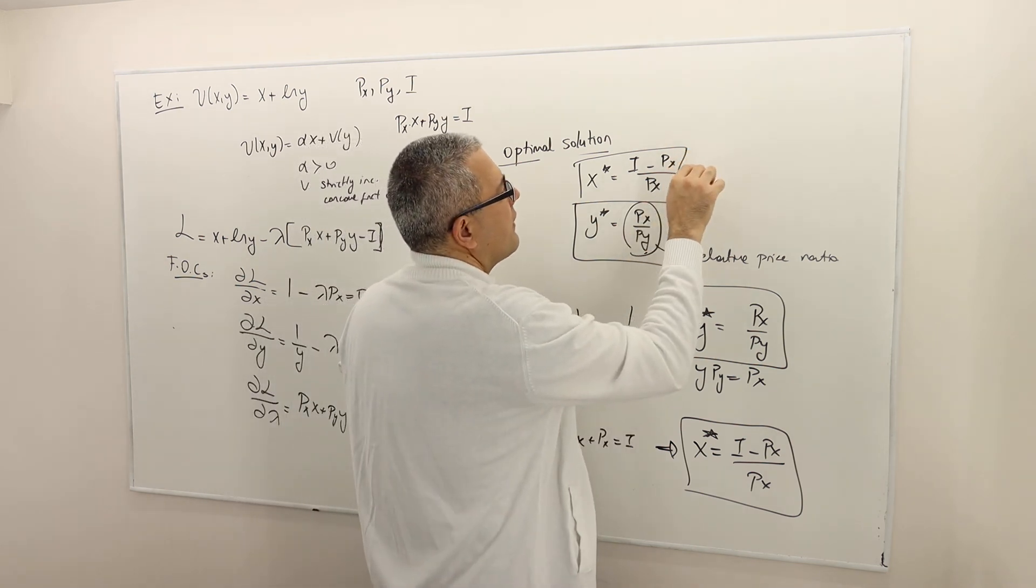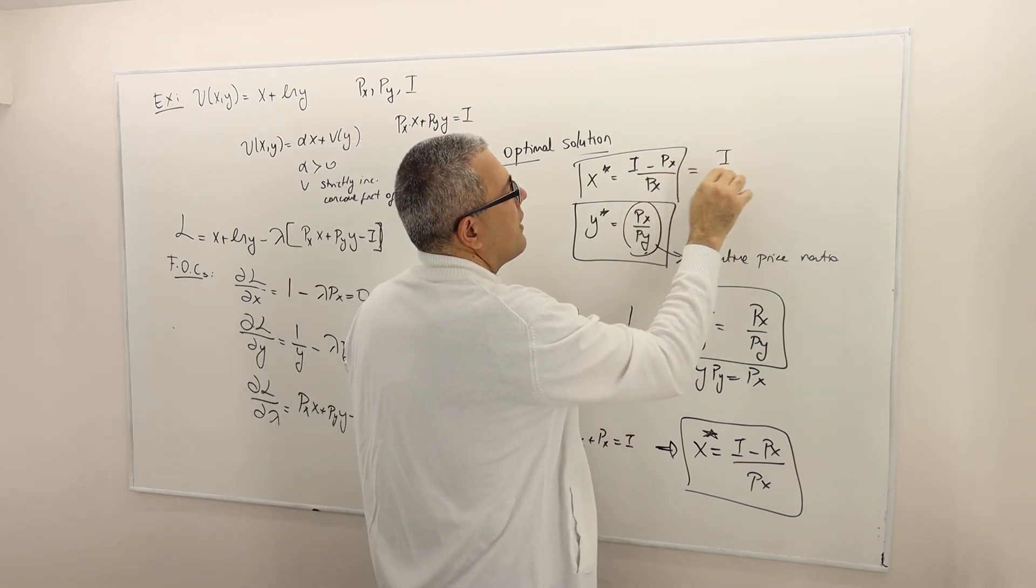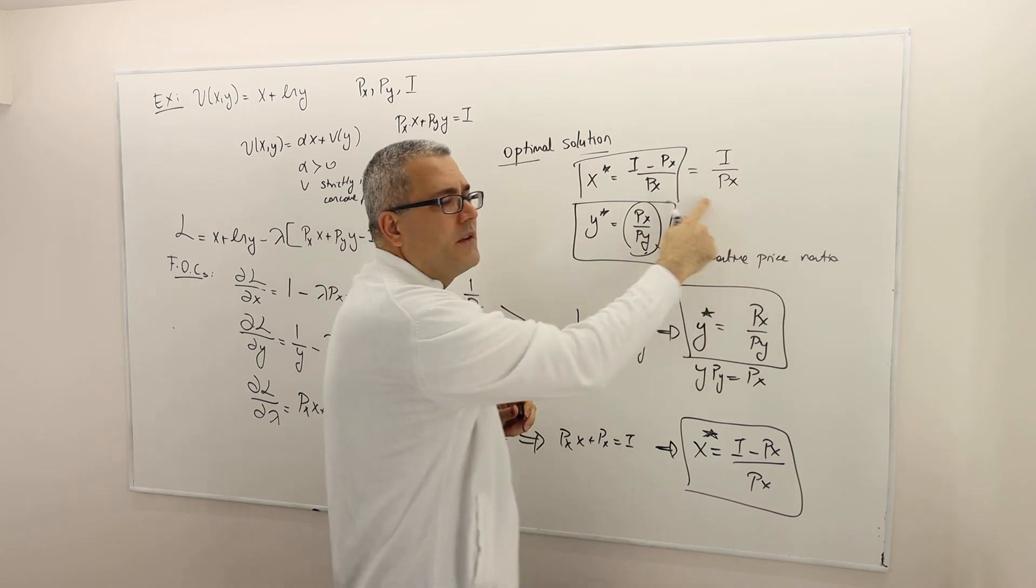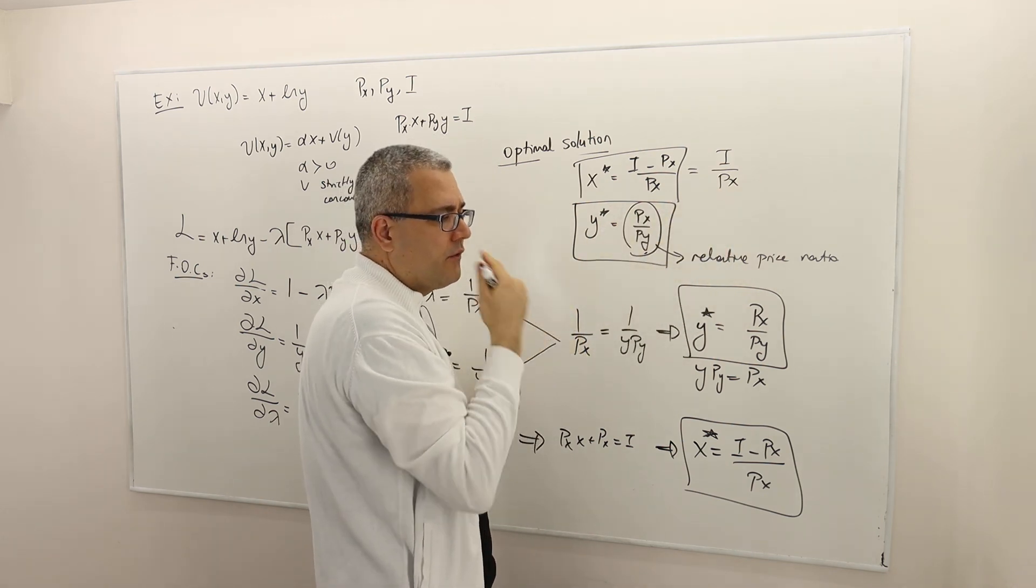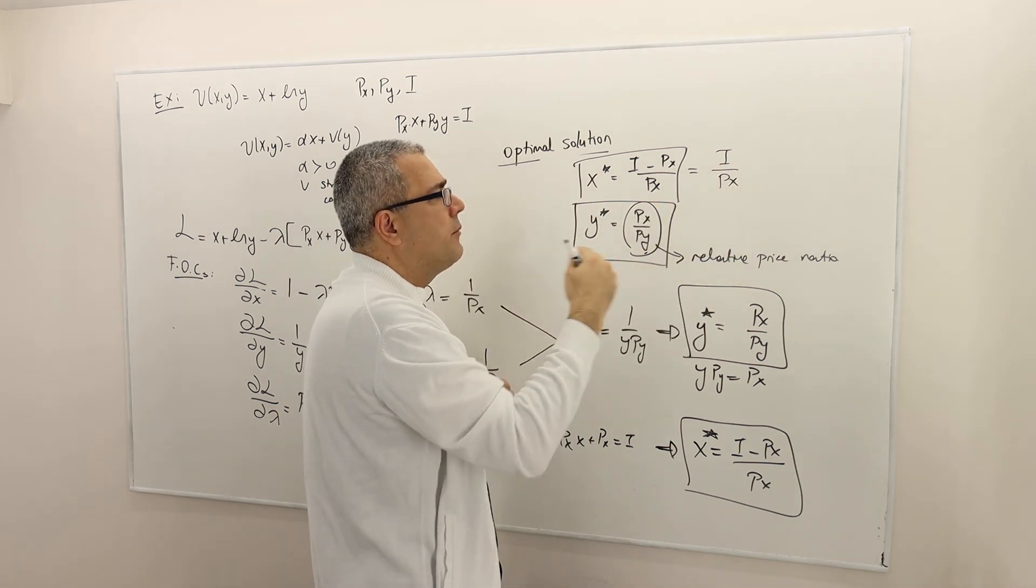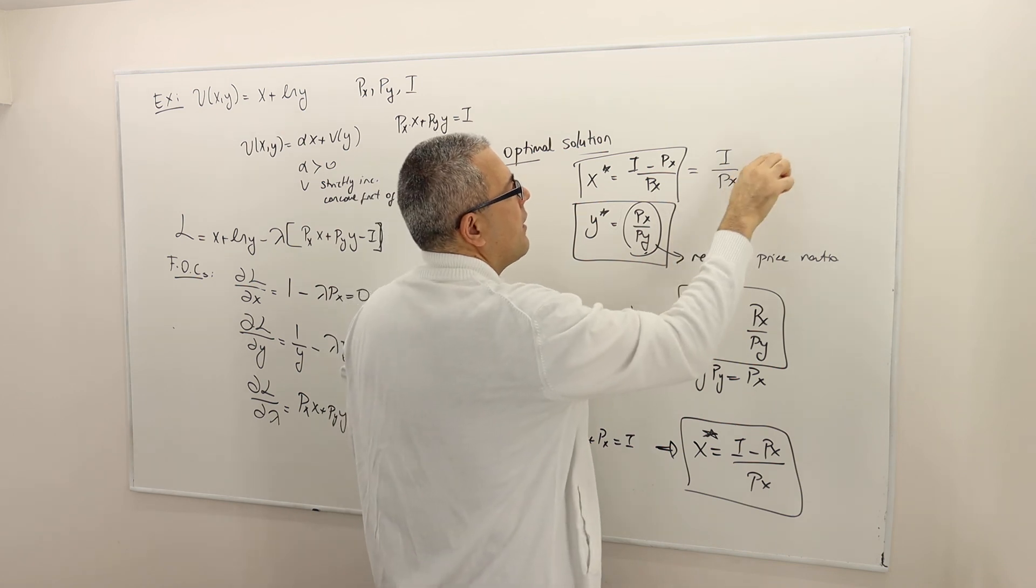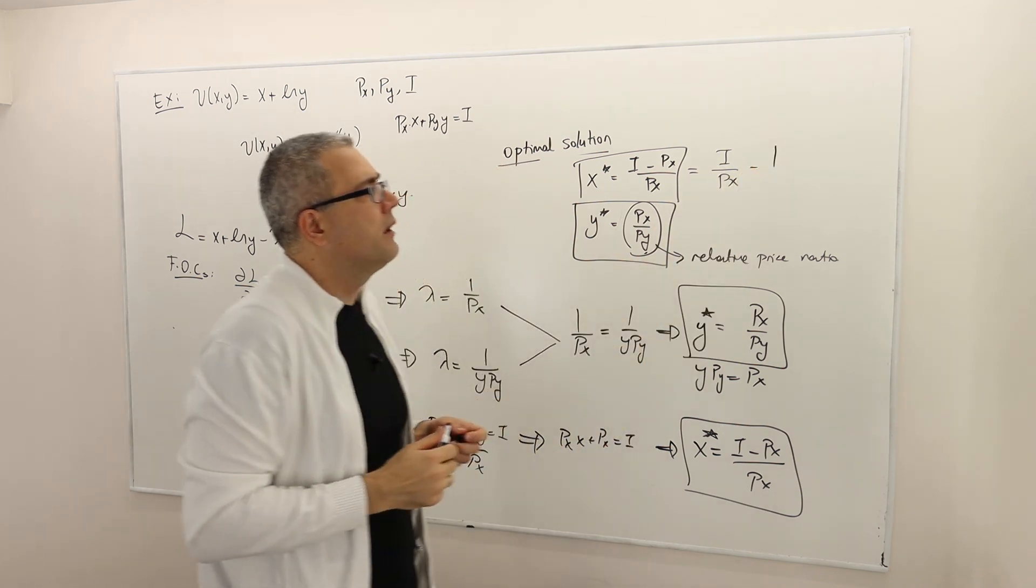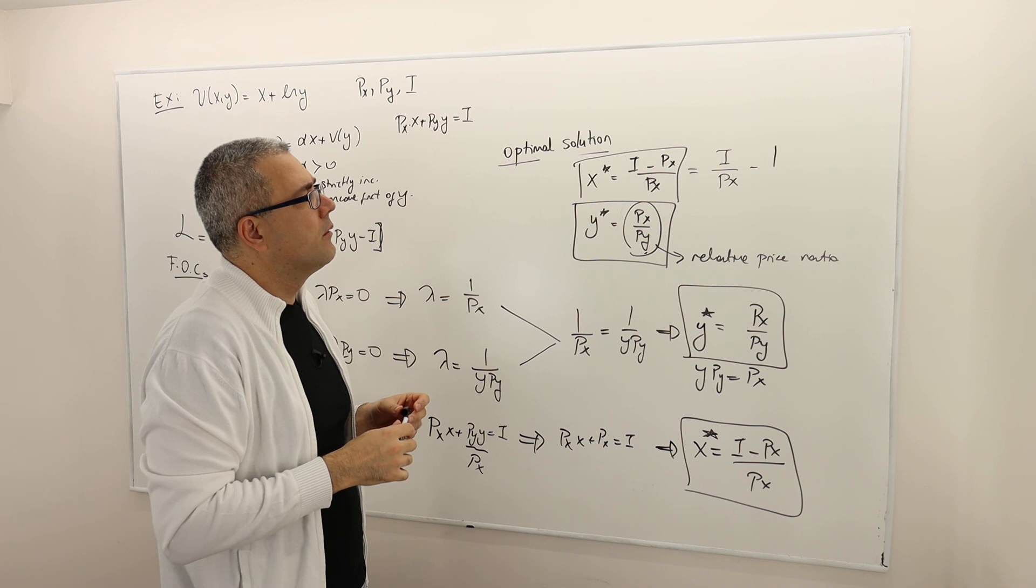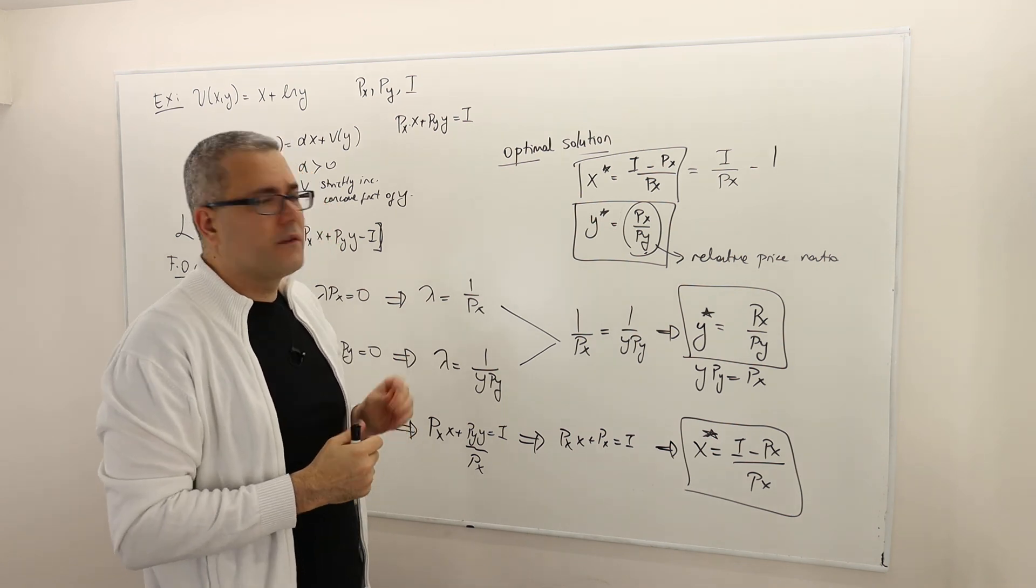So if you simplify this, that's also equal to income divided by px, which basically tells me the maximum amount of good x you can buy minus one. That's it.